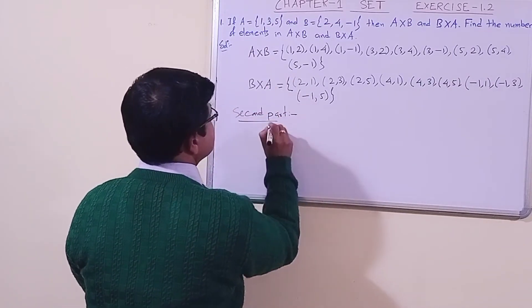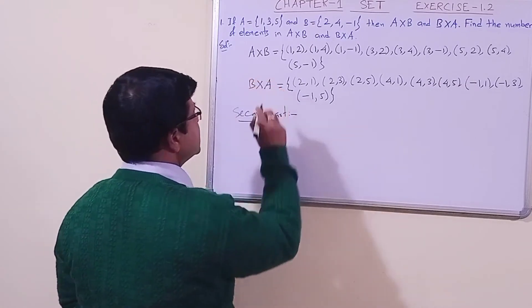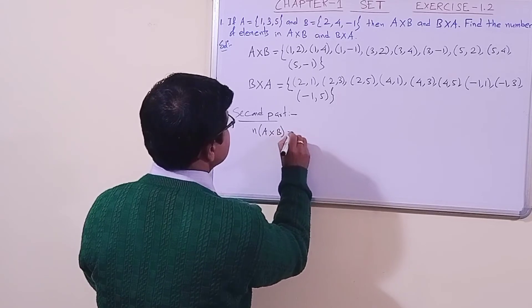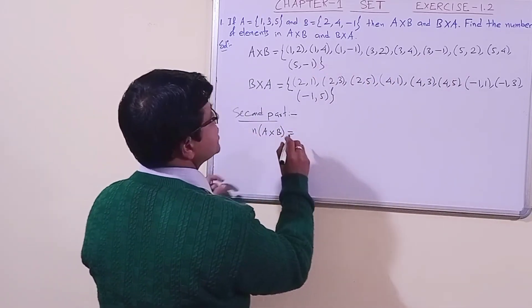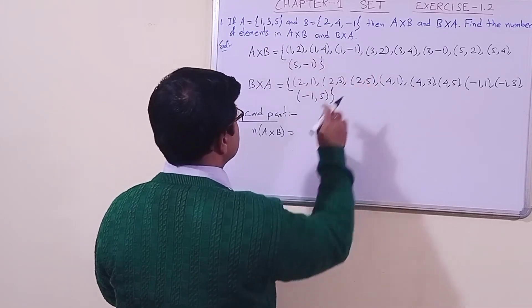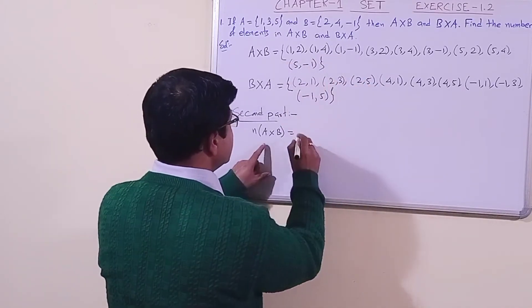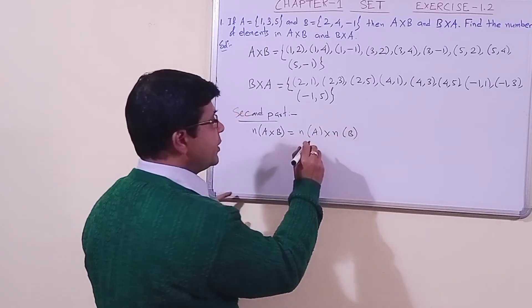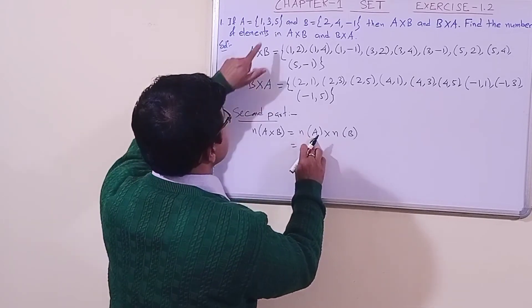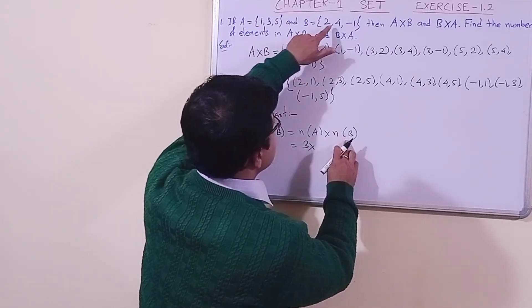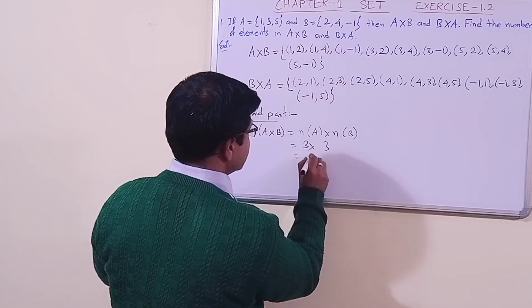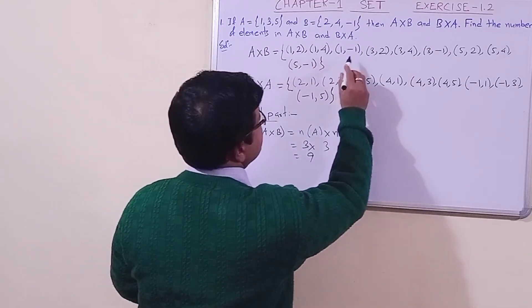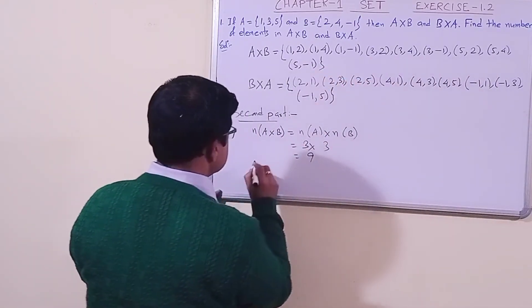The second part of the question is to find the number of elements — the cardinal number of A cross B. It is not necessary to count each element individually. A better method is: n(A cross B) = n(A) × n(B). Set A has 3 elements, Set B has 3 elements, so n(A cross B) = 3 × 3 = 9. You can verify by counting: one, two, three, four, five, six, seven, eight, and nine.